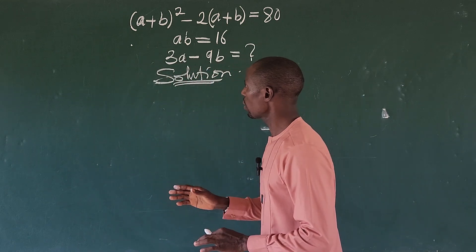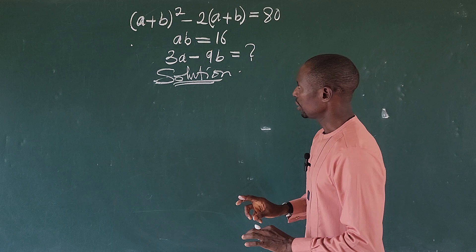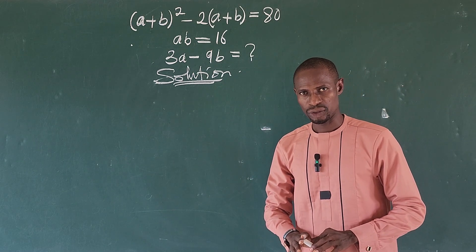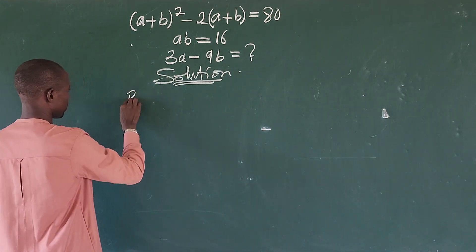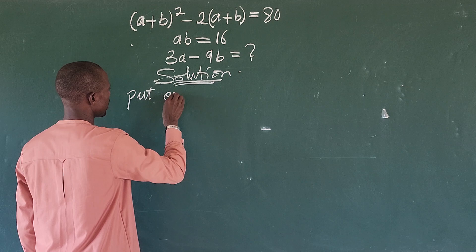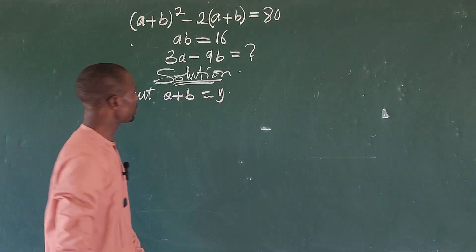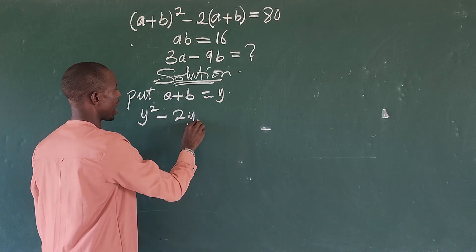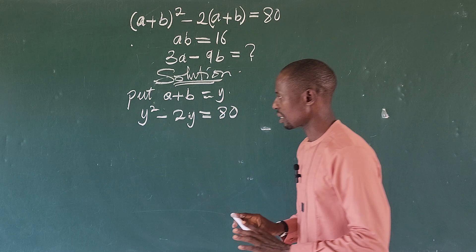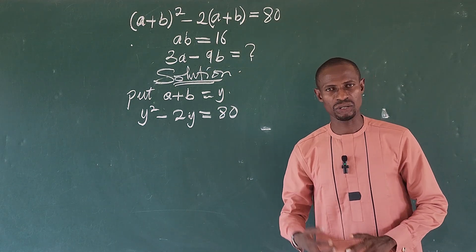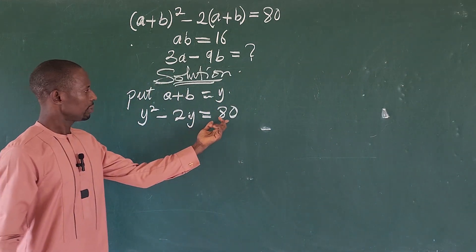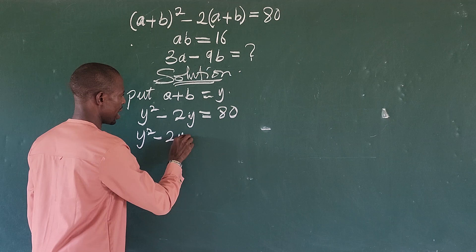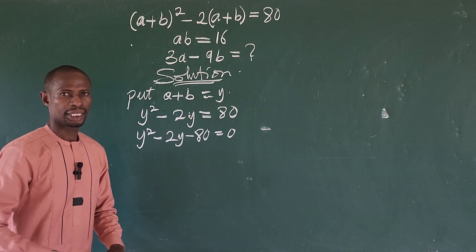Taking a critical look at the main equation, you can see that the quantity (a + b) appears twice. This is actually a quadratic equation. To make it more obvious, let y equal a plus b. Rewriting the equation gives us y squared minus 2y equals 80. That is the quadratic equation. Bringing everything to one side gives y squared minus 2y minus 80 equals zero.